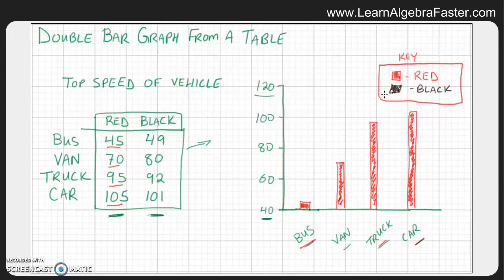So now let's go to the black vehicles and let's look for black buses, which is 49, which would be a little bit higher here. So we'll go ahead and make that bar and color it in. Now let's go to black vans, which is 80. So we'll draw that bar here.